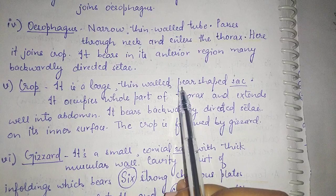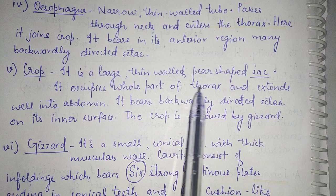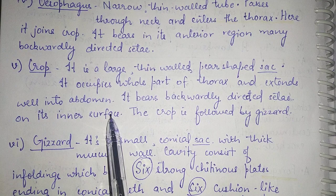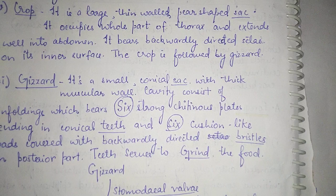Next to the esophagus is the crop. The crop is a large thin-walled pear-shaped sac. It occupies the whole part of the thorax and extends well into the abdomen. It bears backwardly directed setae on its inner surface. The crop is followed by the gizzard.